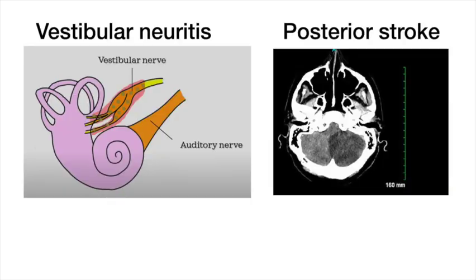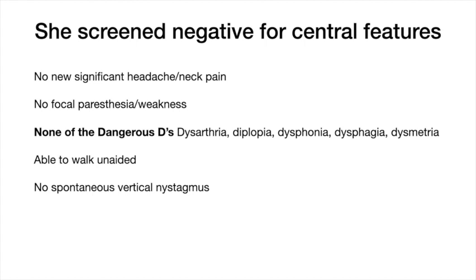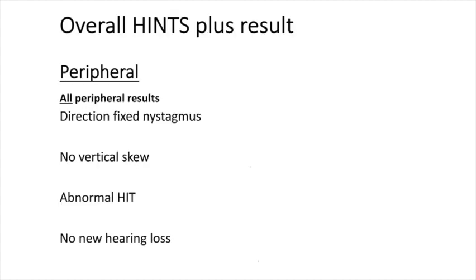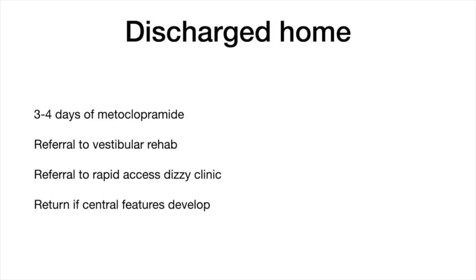So in summary, to diagnose this patient with acute vestibular syndrome as vestibular neuritis — which is more common, but could have been a posterior circulation stroke masquerading as vestibular neuritis — I first screened her for central features. As she screened negative, I used the HINTS-Plus exam to demonstrate nystagmus that doesn't change direction with gaze, no vertical diagonal skew, an abnormal head impulse test when her head was turned away from the fast direction of nystagmus, and a normal bedside test of hearing. As all four components were peripheral, the overall HINTS-Plus exam was peripheral — likely vestibular neuritis. I discharged her home with a limited supply of an antiemetic and a referral to vestibular rehab.